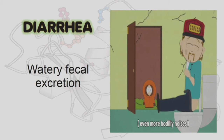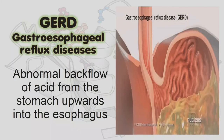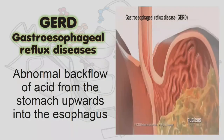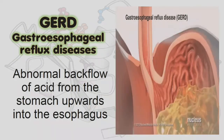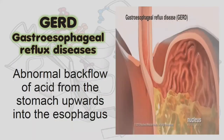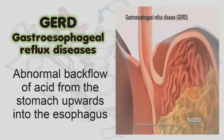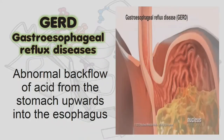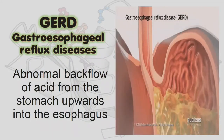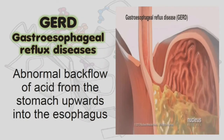The next digestive disorder is GERD, or gastroesophageal reflux disease. It is characterized by heartburn or chest pain, also known as acid reflux. It is a condition of abnormal backflow of acid from the stomach upward into the esophagus, which can lead to irritation and damage to the esophagus. Antacids are usually prescribed to reduce or neutralize acidity; if antacids do not work, surgery is recommended.